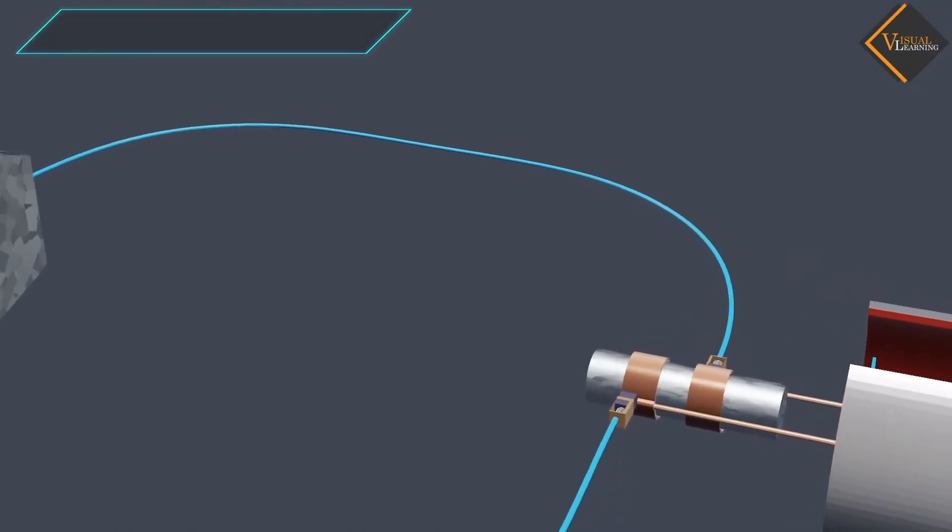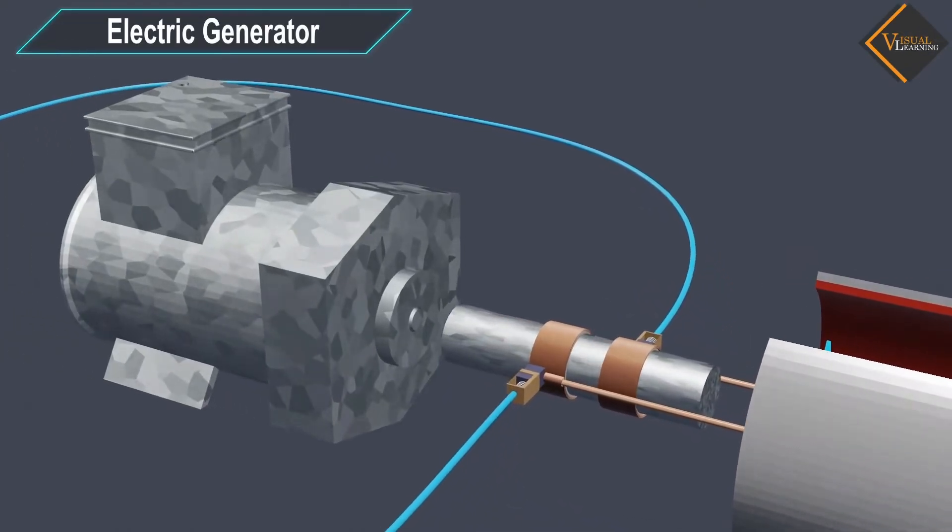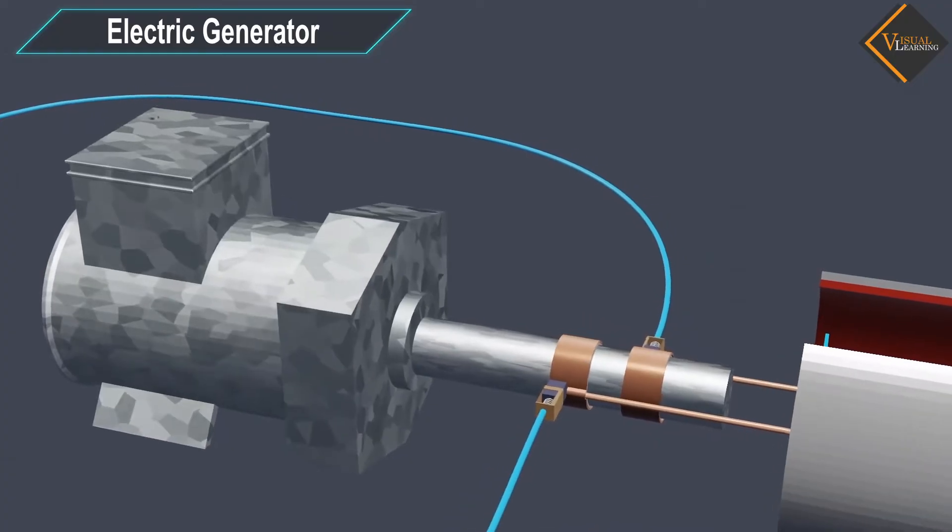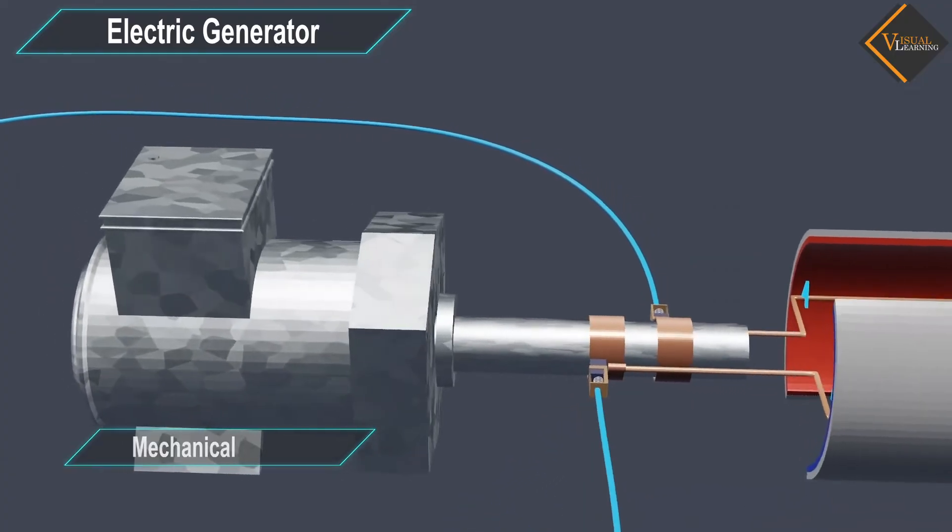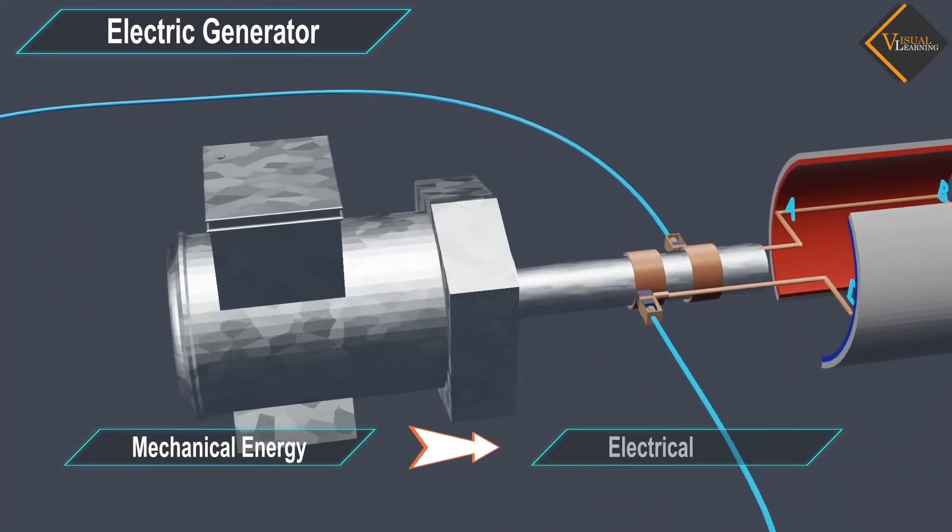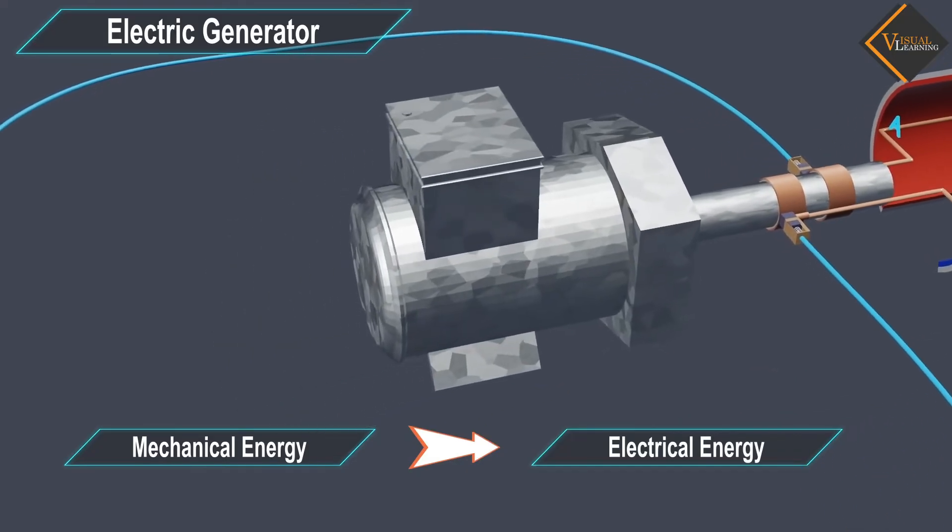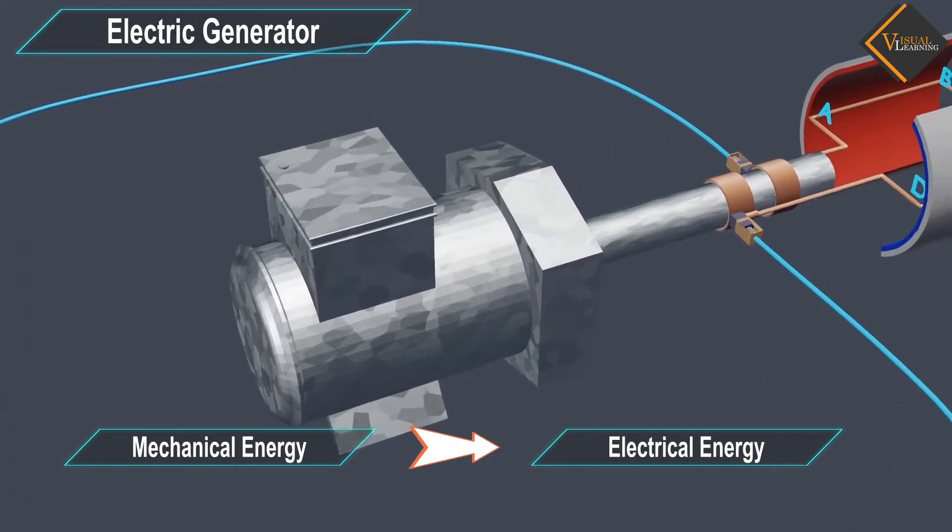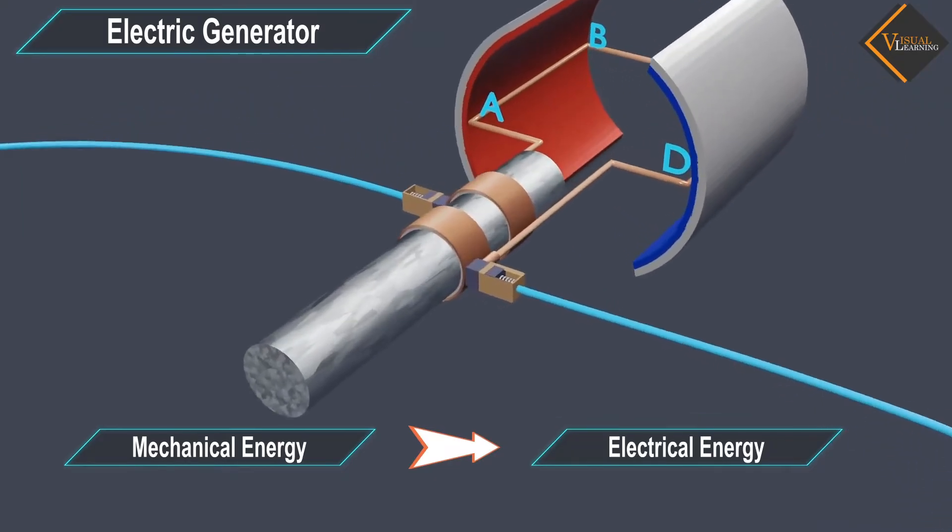In this video, we will understand electric generator. An electric generator is a device which converts mechanical energy into electrical energy. The electric generator is used to produce large current for use in homes and industry.